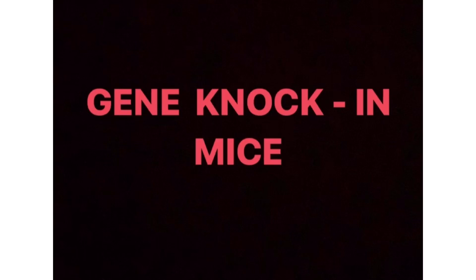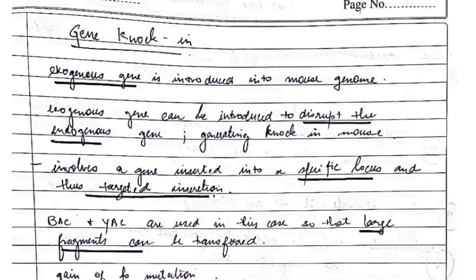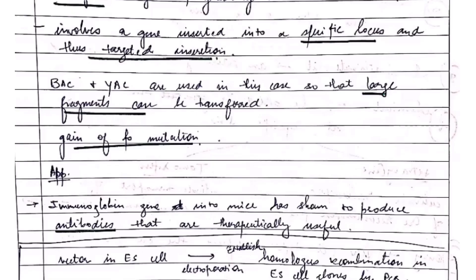Next is gene knock-in mice. This means an exogenous gene is introduced — that is, we are introducing a new gene from outside. The genes are inserted into a specific locus, making them targeted insertions. The process of gene knock-in can also be studied by the Cre-lox recombination system.